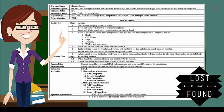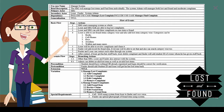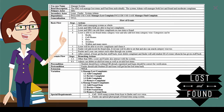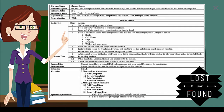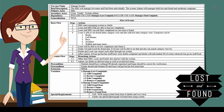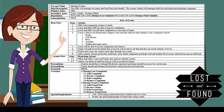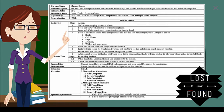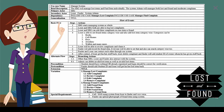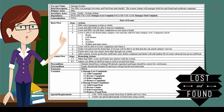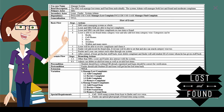The fields a use case description should have are: use case name, brief description, primary actor, secondary actor, dependency, generalization, basic flow, alternate flow, precondition, post condition, extension, variation, and special requirements.